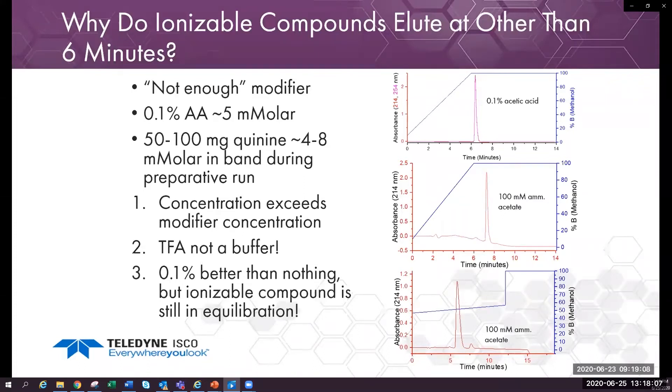There is good peak shape. 0.1% modifiers do work well enough. Most compounds will elute on the gradient, but this experiment again shows that proper buffering creates the correct elution time.